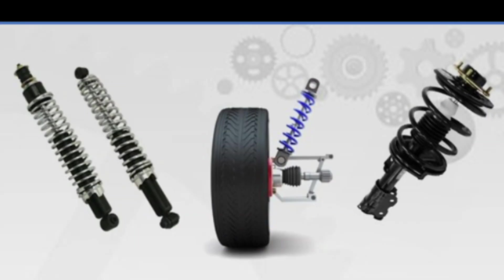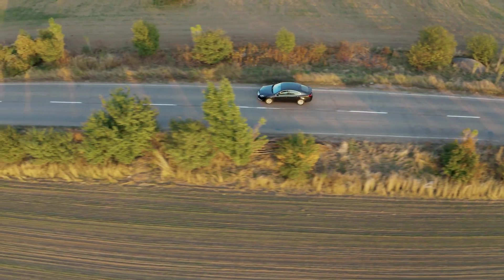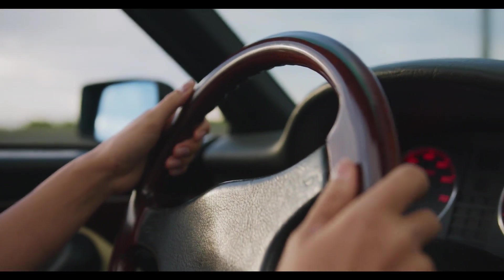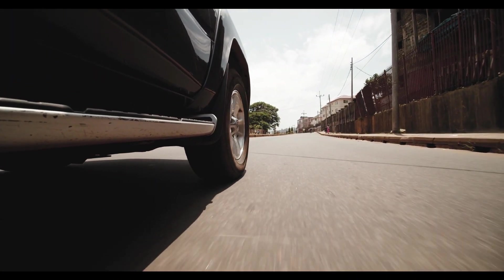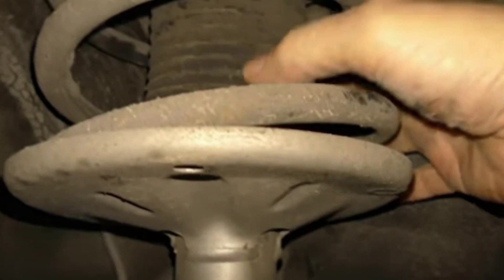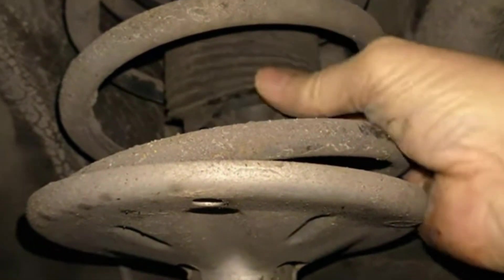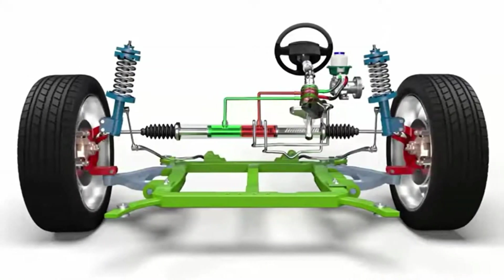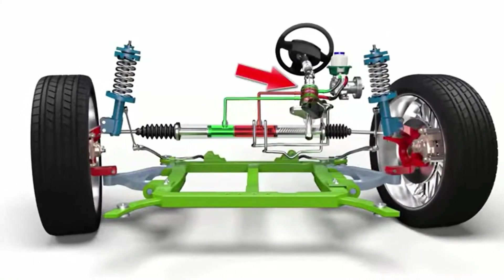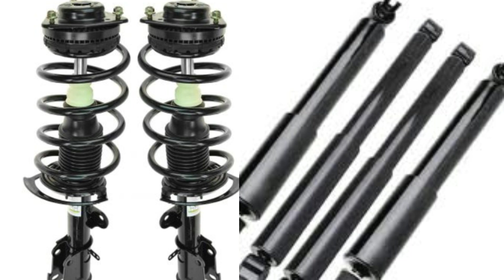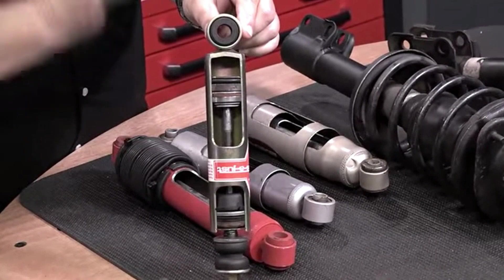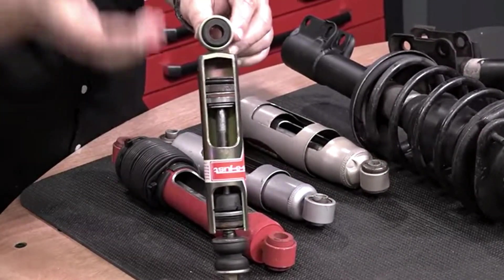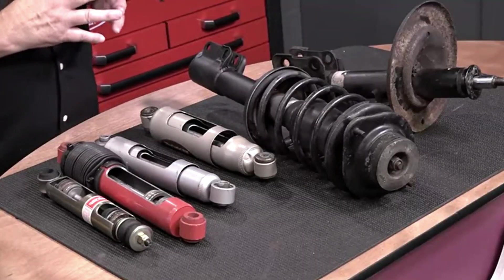In summary, both struts and shocks play critical roles in a vehicle's suspension system, impacting ride comfort, handling, and overall safety. Shocks focus solely on dampening the oscillations of the suspension springs, while struts provide both dampening and structural support, as well as assisting with alignment and steering functions. The choice between struts and shocks depends on the specific suspension design of the vehicle, and understanding their differences helps in proper maintenance and replacement decisions to ensure optimal performance and safety on the road.